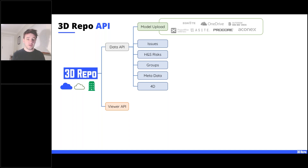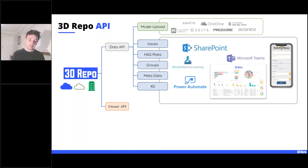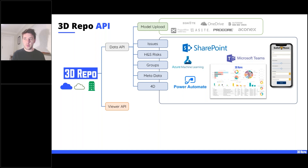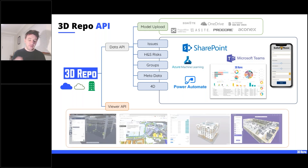The model upload API integrates with services like ProjectWise and Procore — you send a model to a web address and it gets uploaded to 3D Repo. The data API covers issues, health and safety risks; we've built things like a safety-based Power App, SharePoint integration, and a Microsoft Teams chatbot. You could even pull all model data and run it through a machine learning algorithm. The viewer API lets us embed the 3D Repo viewer into other experiences like Procore, Plan Base, and 3D Send.